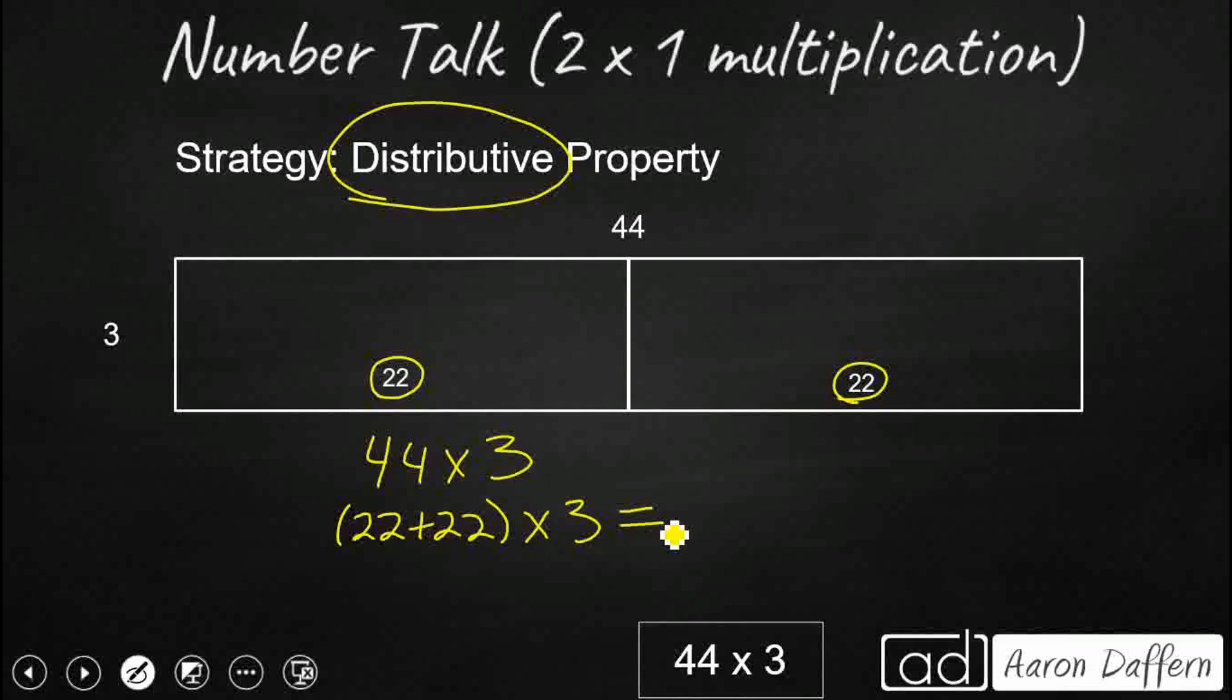When we use the distributive property, we break that apart so it multiplies by each of those. So we get 22 times 3, and then we add that to the other 22 times 3. We're breaking it into two chunks. That's 66 and 66. Add those together and we get the answer you hopefully got: 132.